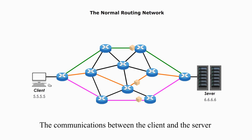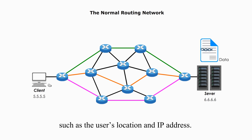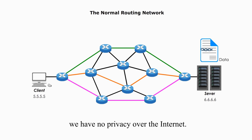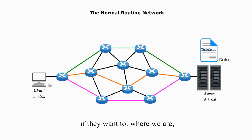The communications between the client and the server can reveal much about the user, such as user location and IP address. In a normal situation, we have no privacy over the internet. Big companies, big brothers, and hackers know about us if they want to.